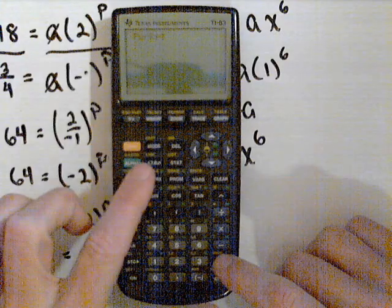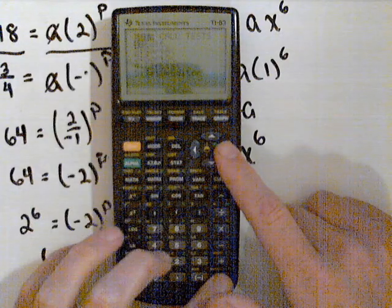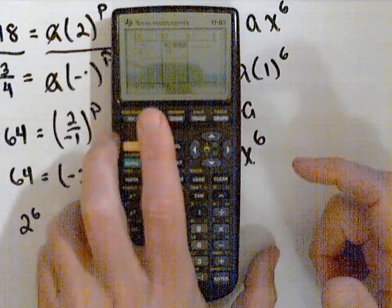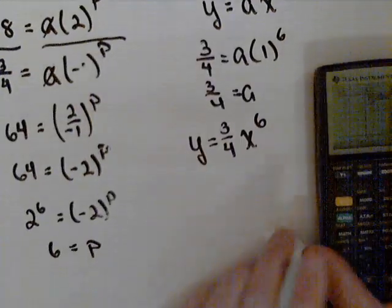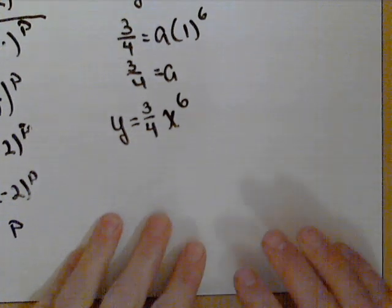And I get a domain error. So this is where I said something interesting actually shows up in here. Now if I go to it, the domain error in the power regression is the fact that I'm trying to use the point (-1, 3/4). So that causes an issue. But here's how we can resolve that.